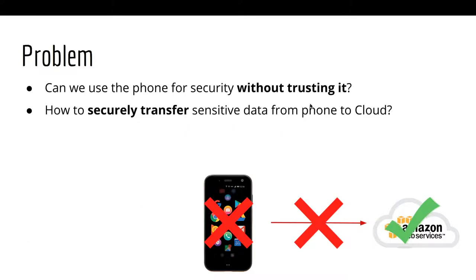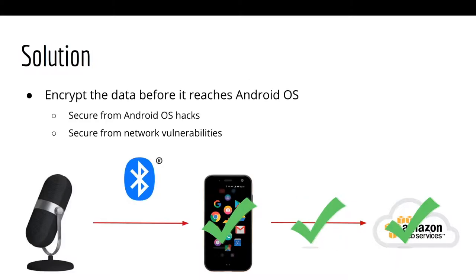This brings us to the question: can we use this phone for data security without trusting the operating system running on that phone? And can we, by proxy, solve the second problem of securely transferring the data from the device to the cloud? The answer is yes, and that's what we've done. We've created a system that will encrypt the data on the phone before handing it over to the Android operating system. And because we're not decrypting this data before it reaches the cloud, it'll also be safe over that internet connection.